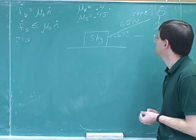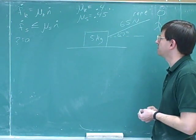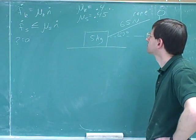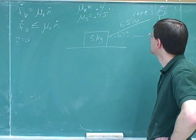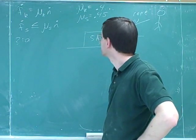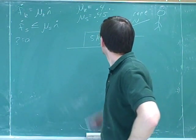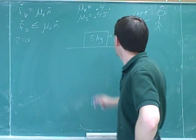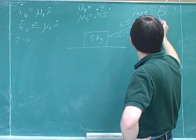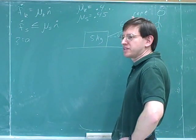Okay, here's another question. We need to find the acceleration of this object. μₖ is 0.4, μₛ is 0.45. It's a 5 kilogram object. Here's a person pulling on a rope with 65 newtons.